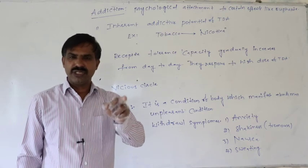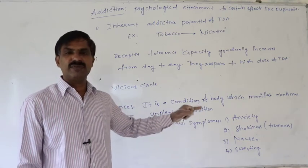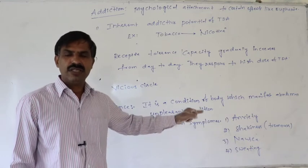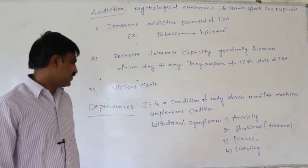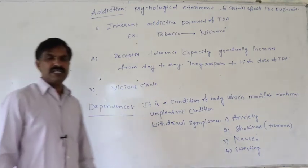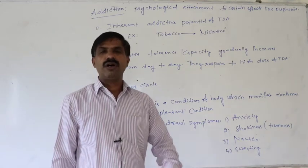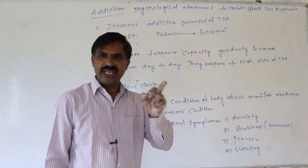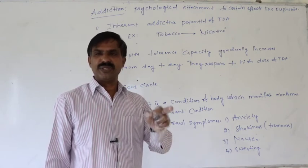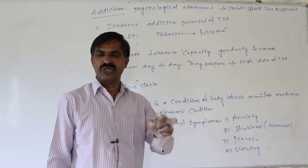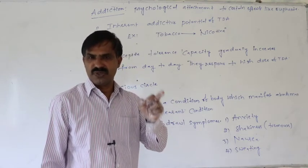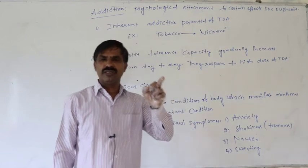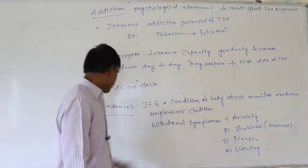Therefore, if we provide TDA to that kind of person, within few seconds all those symptoms disappear — that is said to be as dependence. Definitely, dependent persons ignore all social norms; they always try to abuse TDA only and collect TDA only. They never follow the social rules and norms of society — that is said to be as dependence.